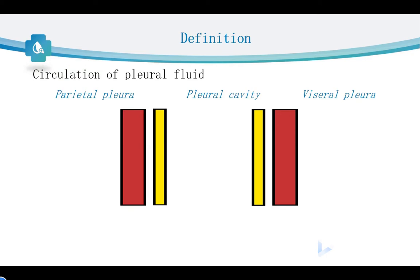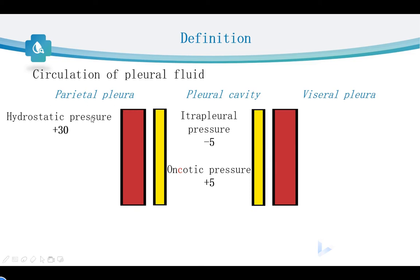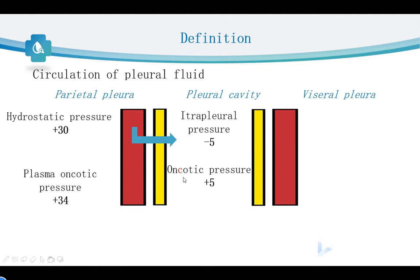This page shows the circulation of pleural fluid. There is a negative intrapleural pressure caused by the negative intrathoracic pressure during inspiration. In the parietal pleura, the hydrostatic pressure in the blood capillaries is higher, so fluid transfers into the pleural cavity. The plasma oncotic pressure in the blood capillaries is higher than the oncotic pressure in the pleural fluid, so some fluid can be reabsorbed into the capillaries and lymphatics.